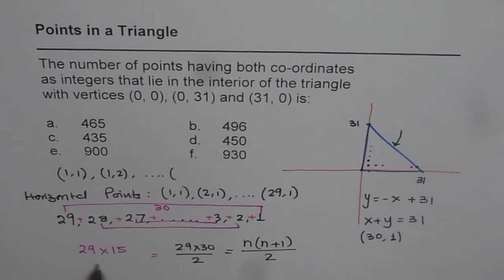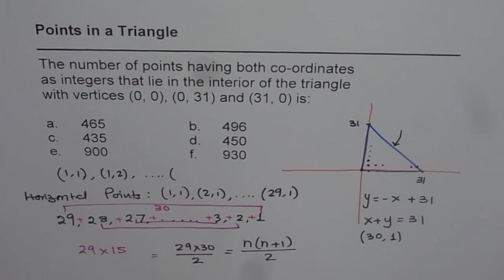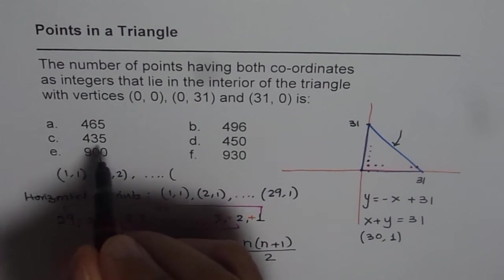So 29 times 15 is the total number of points which will be inside this triangle having both x and y coordinates as integer values. Which is, if you calculate, 435.